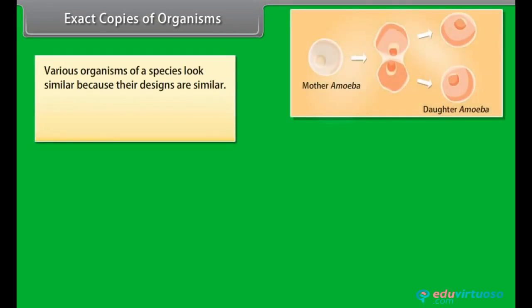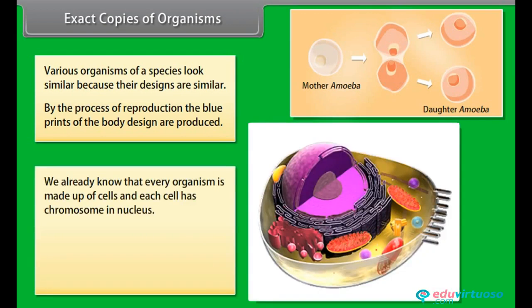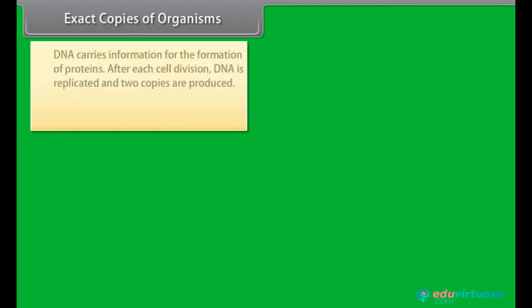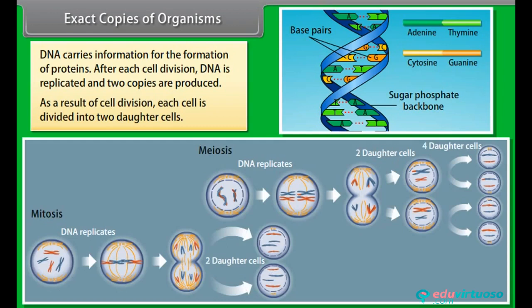Various organisms of a species look similar because their body designs are similar. By the process of reproduction, the blueprints of the body design are produced. Every organism is made up of cells, and each cell has chromosomes in the nucleus. These chromosomes bear information for transmission of characters from parents to offspring in the form of DNA. DNA carries information for the formation of proteins. After each cell division, DNA is replicated and two copies are produced, resulting in two daughter cells.